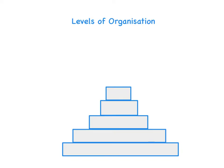All of this can be summarized into different levels of organization. Cells are the basic units of life and sit at the bottom of the pyramid. If we have a group of cells working together to carry out the same job, we end up with a tissue. If we have a group of tissues working together, we will have an organ. A group of organs working together to perform the same job gives us an organ system. And finally, a group of systems working together to carry out the same job gives us an organism.